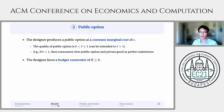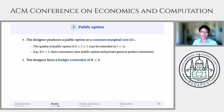The third component of the model is the public option. The designer produces a public option at a constant marginal cost of C, and the quality of the public option is delta, which I assume is between 0 and 1 — although results extend straightforwardly to the case where delta is greater than 1. For instance, if delta is exactly equal to 1, then consumers view the public option and the private good as perfect substitutes. The designer also faces a budget constraint of B.